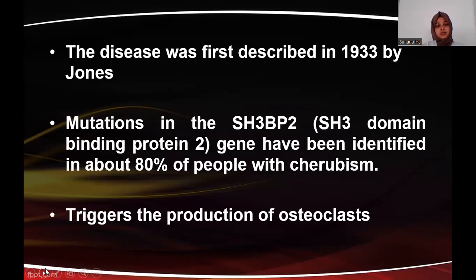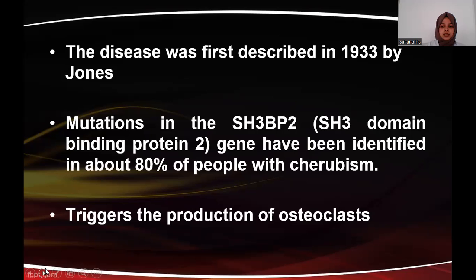The disease was first described in 1933 by Jones. The mutation in the SH3-BP2 gene is the reason for cherubism, and due to this mutation there is triggering in the production of osteoclasts — that is, there are defective osteoclasts in cherubic patients, whereas in other fibro-osseous lesions it is defective osteoblasts.